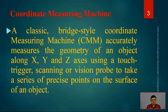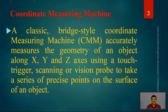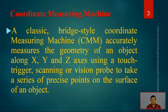A classic bridge-style coordinate measuring machine accurately measures the geometry of an object along XYZ axes using a touch trigger, touch-based sensors, or scanning/vision probes. Without any touching, we can scan surfaces or points. The computer captures a series of precise points on those surfaces, generates a 3D model, and compares it with the intended design model. On that basis, the decision related to acceptance, repair, or rejection of the object is made.